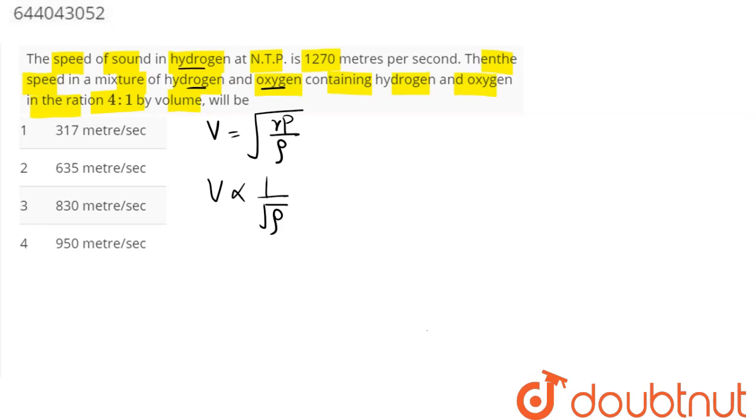Now we have velocity in the hydrogen. We require velocity in the mixture. Therefore we can say velocity in hydrogen divided by velocity in mixture comes out as root under rho mixture divided by rho hydrogen.